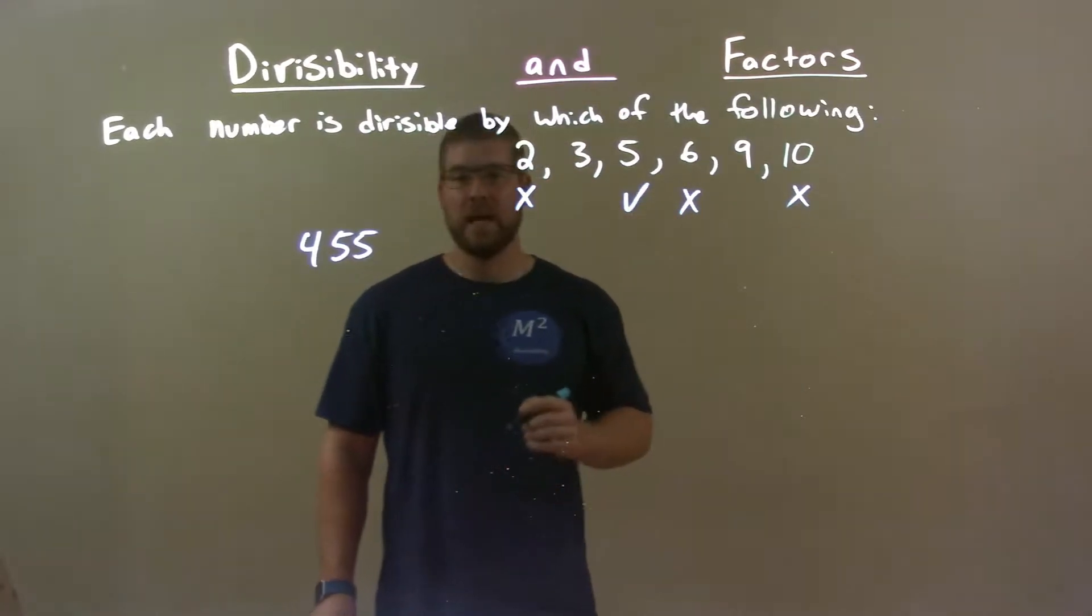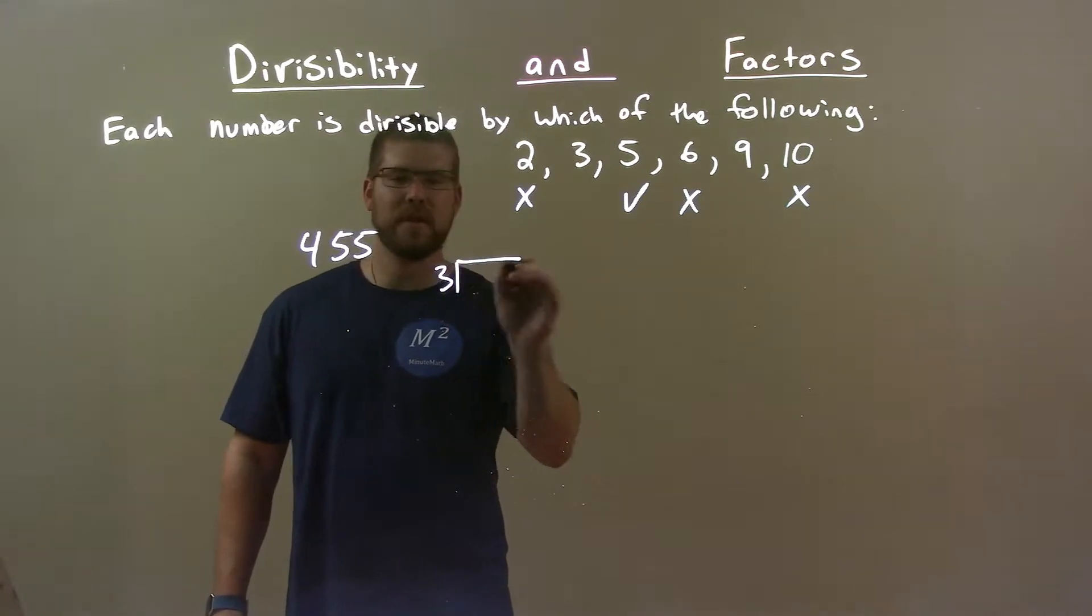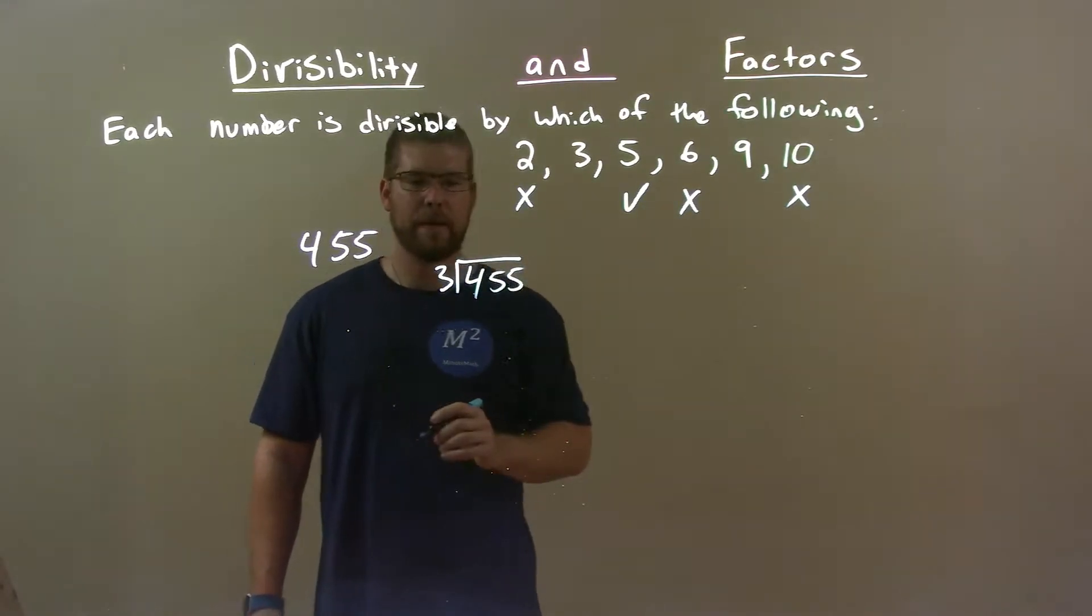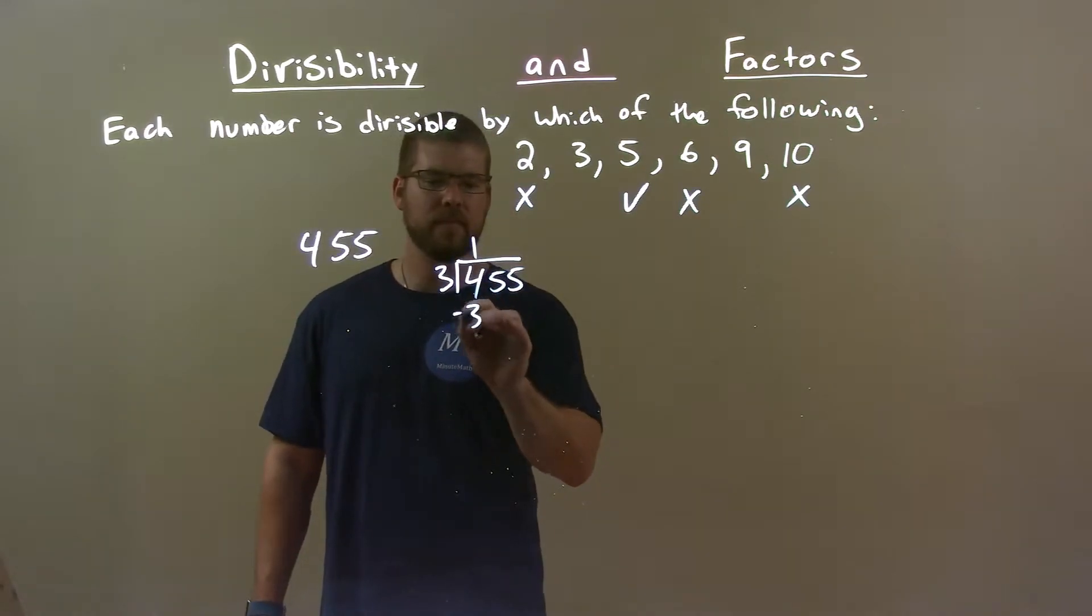Okay, so now we just have 3 and 9 to check. Long division with 3. 3 goes into 455. Well, 3 goes into 4 one time. 1 times 3 is 3. Subtract them. Got a 1.